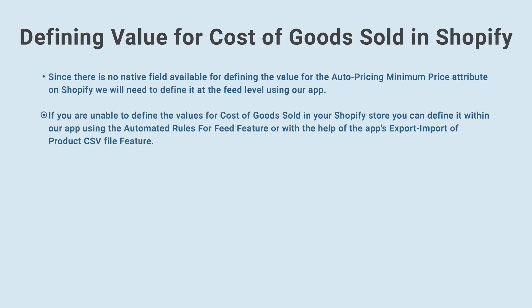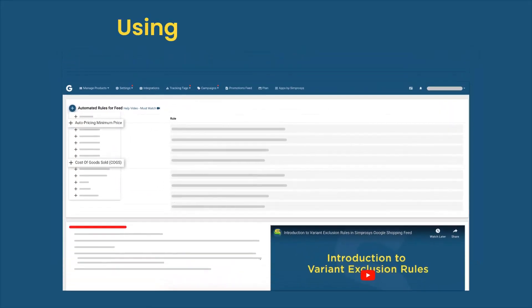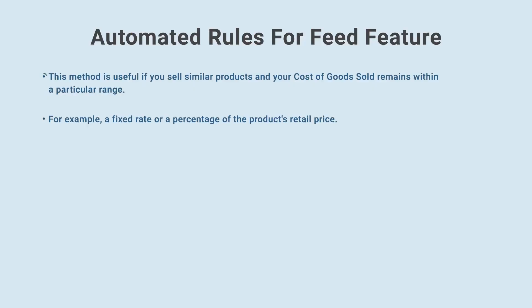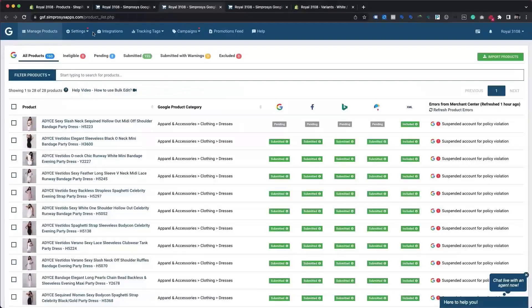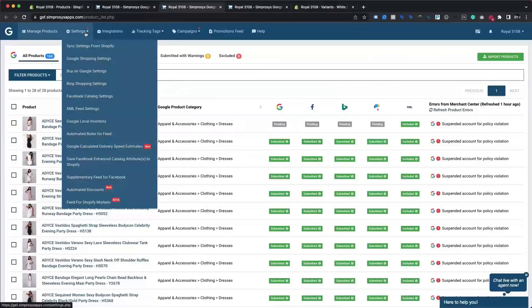If you are unable to define the values for cost of goods sold in your Shopify store, you can define it within our app using the automated rules for feed feature or with the app's export/import of product CSV file feature. Method 2: Using the automated rules for feed feature. This method is useful if you sell similar products and your cost of goods sold remains within a particular range, for example, a fixed rate or a percentage of the product's retail price. From the app interface, hover over the settings menu and click on automated rules for feed.